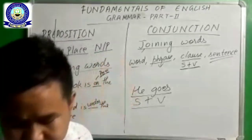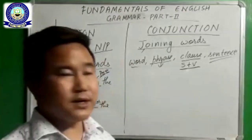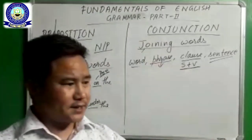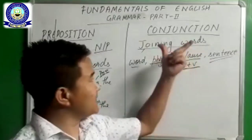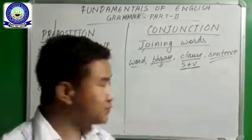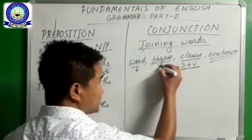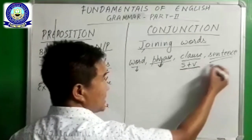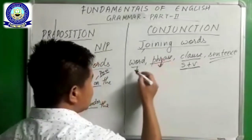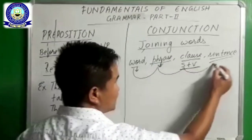And sentence — you already know that. Sentence is a group of words that gives us complete meaning or sense. Now, conjunctions are very sincere and honest — they join word to word, phrase to phrase, clause to clause, and sentence to sentence. It is not that a conjunction joins word and phrase, or phrase and clause, or clause and sentence.